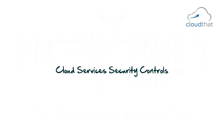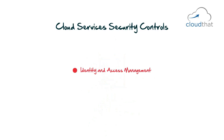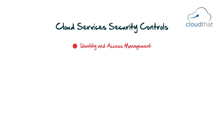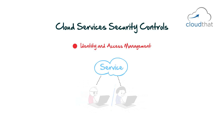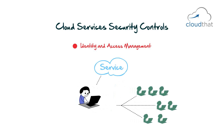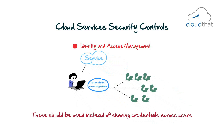Cloud services security controls: various security controls that cloud providers give you include identity and access management (IAM), which is concerned with identifying users and controlling their access to services. Most cloud providers allow you to create different groups and users and assign only the necessary privileges to them, rather than sharing credentials across users.